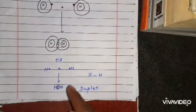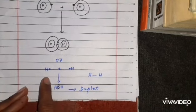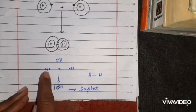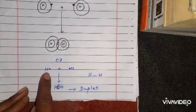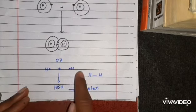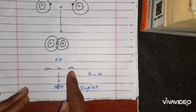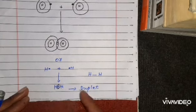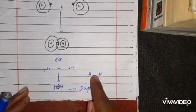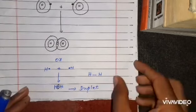We can write it like this, showing the valence shell electrons. Hydrogen has one electron, and this hydrogen also has one electron in its outermost shell. By sharing, they both have two electrons in their outermost shell and complete the duplet rule. This is called a covalent bond.